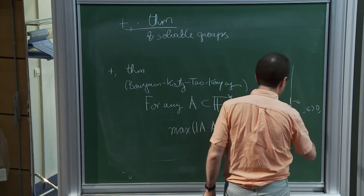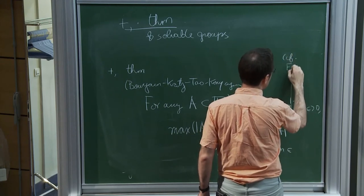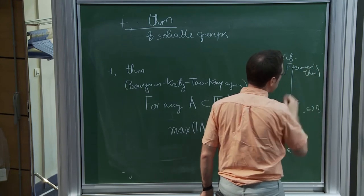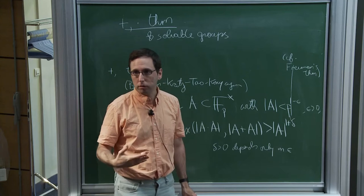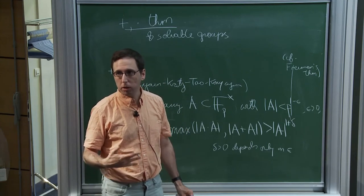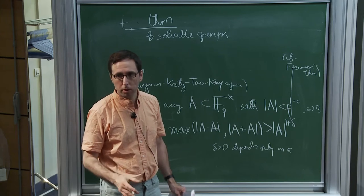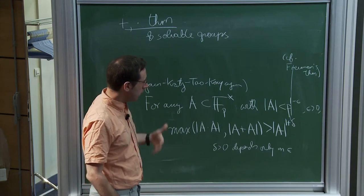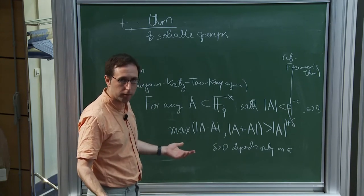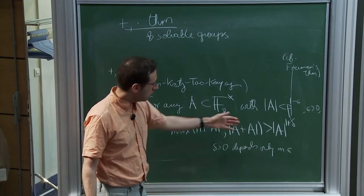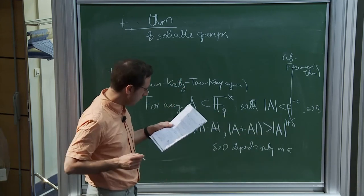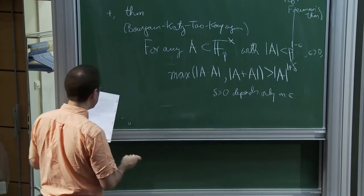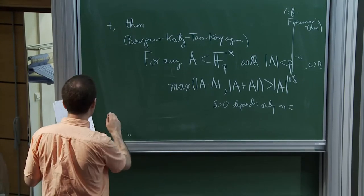Compared to what you get in Freiman's theorem, which we will not talk about — when people were studying which sets grow under addition alone, we are nowhere close to making growth statements of that sort. But even in a field, if you allow an either-or statement — either growth by addition or by multiplication — then you are able to give growth by a power. This sort of statement was already known for R; it was Erdős–Szemerédi, from a while ago.